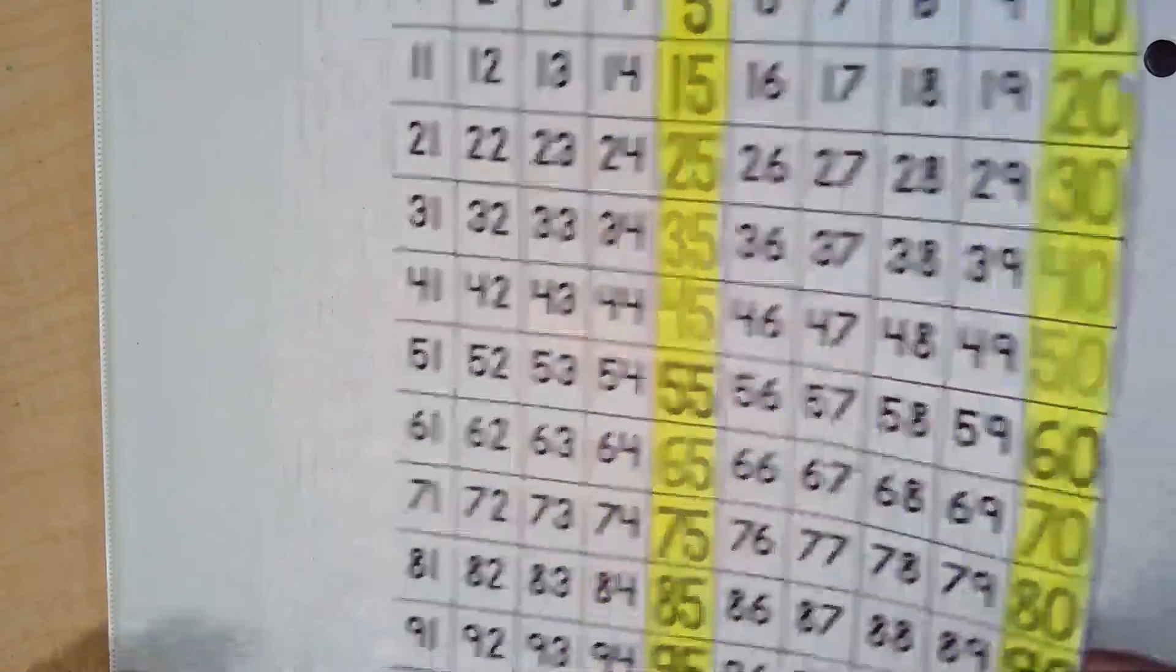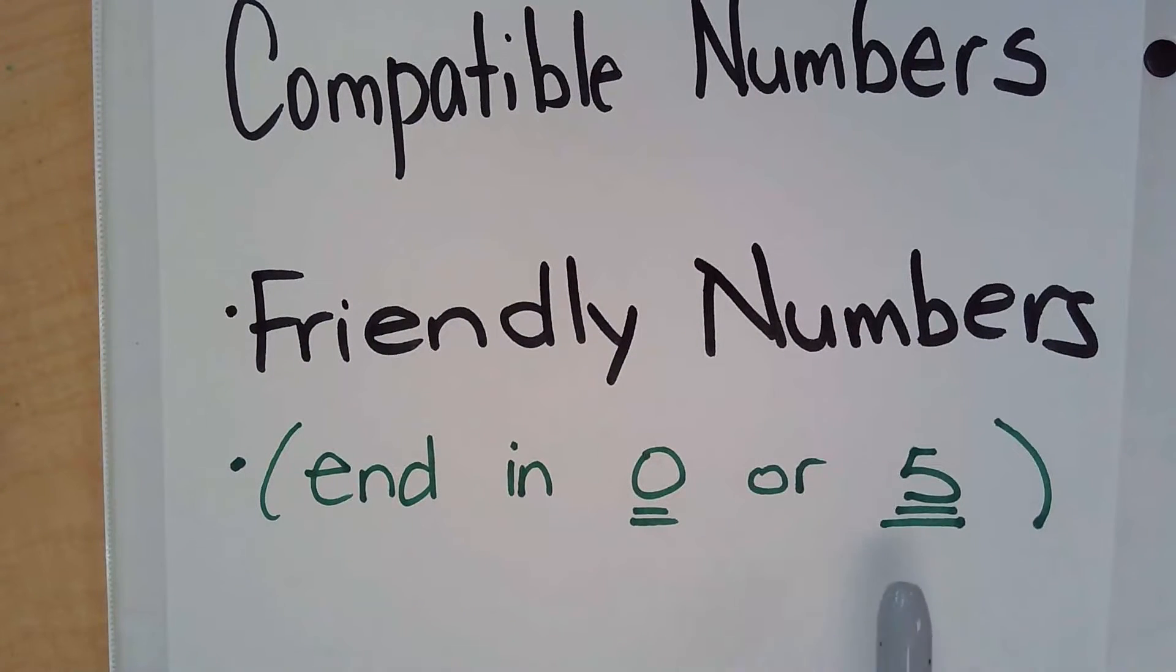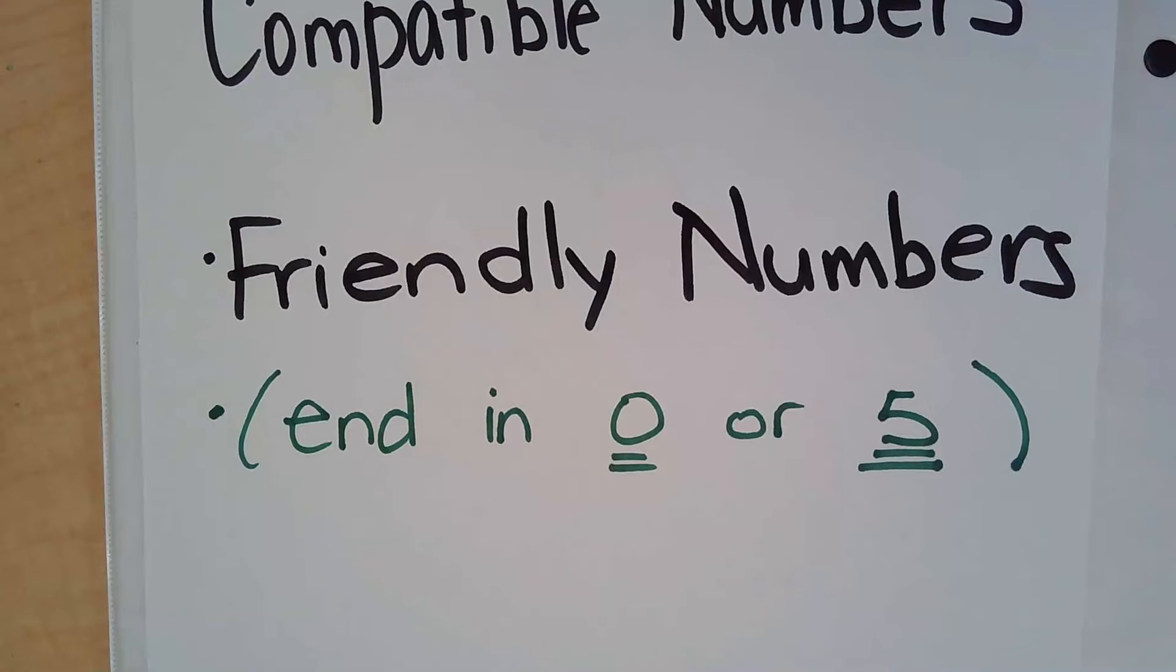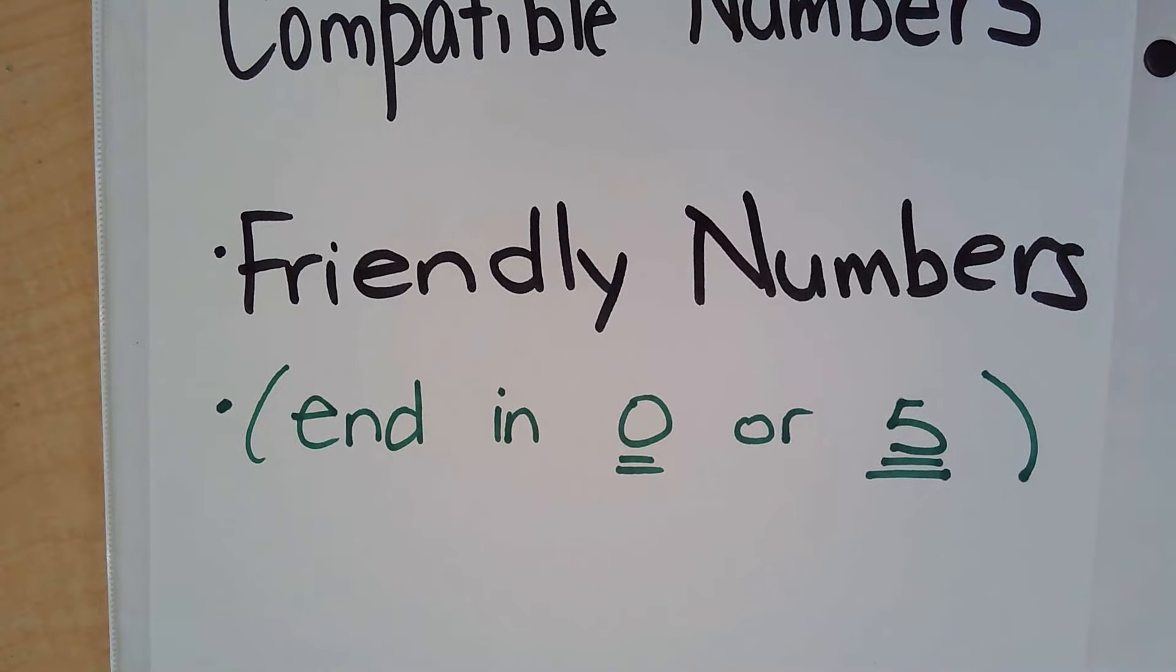Compatible numbers is slightly different from rounding because of the fact that it may end in a five. When rounding, however, rounding numbers always end with a zero. But with compatible and rounded numbers, both of those really help us to do mental math, and being able to do mental math is an amazing thing because it makes it so much easier for us to work with our numbers.